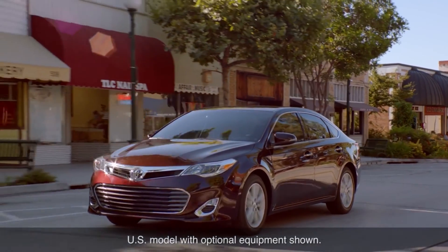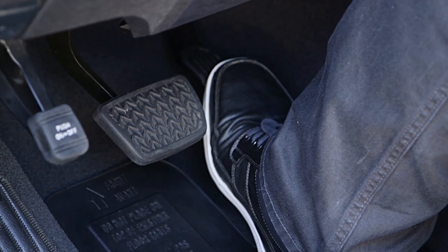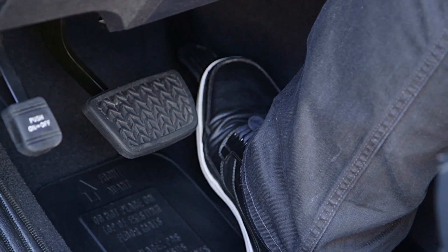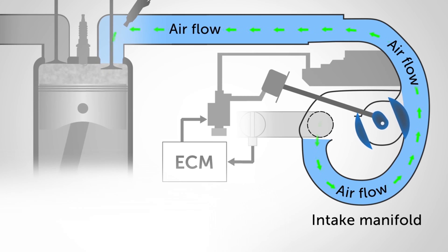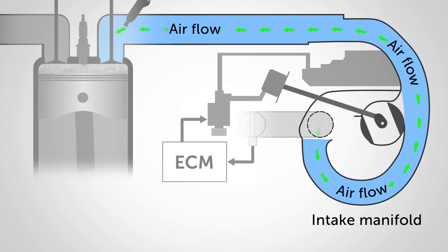At low to medium engine speeds with large throttle openings, as when the accelerator pedal is depressed significantly from a stop for example, the control valve is closed. This effectively increases the length of the airflow path. The greater inertia of the airflow that results helps improve intake efficiency, increasing power output in the low to medium engine speed range.